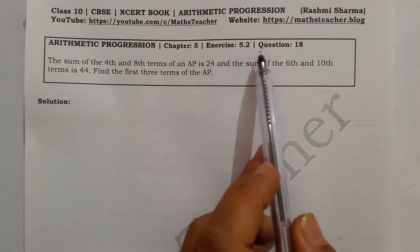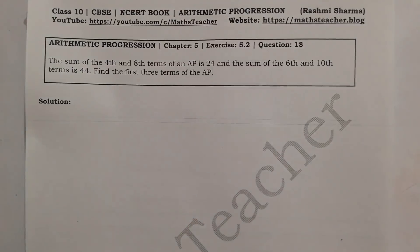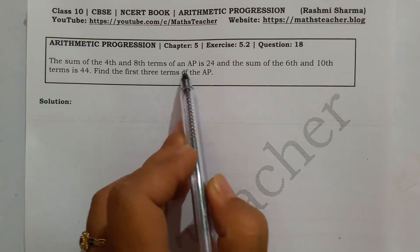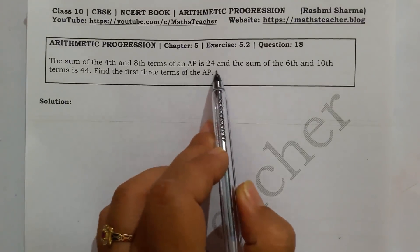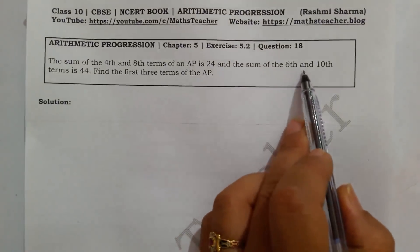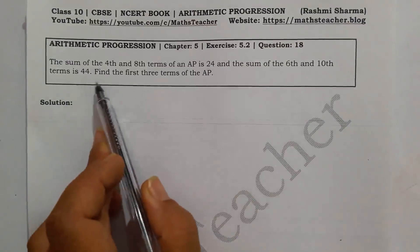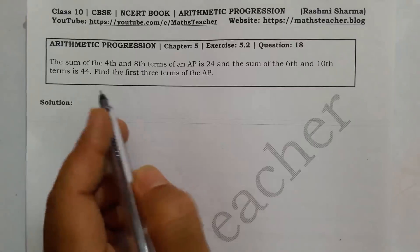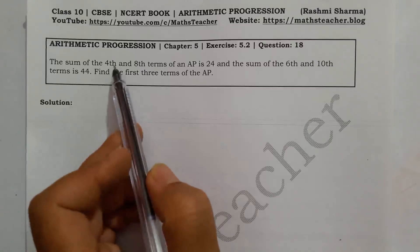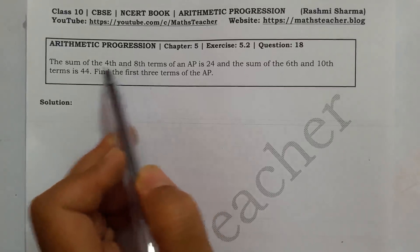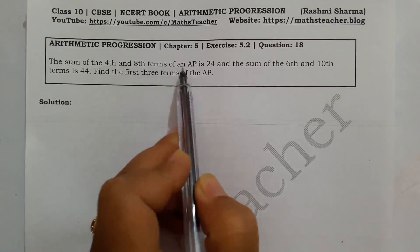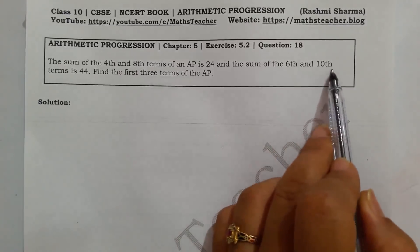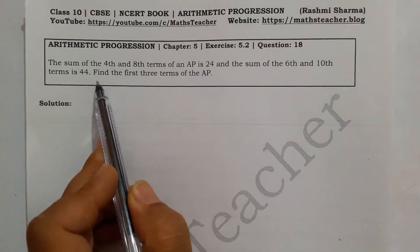In this video we will solve Chapter 5, Exercise 5.2, from Question Number 18. The question is: the sum of the fourth and eighth term of an AP is 24, and the sum of the sixth and tenth term is 44. Find the first three terms of the AP.